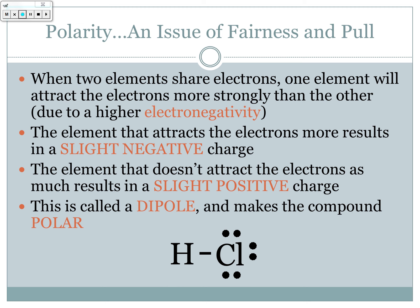For example, hydrogen and chlorine — the single bond we found earlier. Hydrogen has an electronegativity of 2.1, chlorine has one of 2.5, so chlorine is going to attract those electrons more than hydrogen, which means it's going to have a slight negative charge. That symbol that looks like an incomplete 8 is called a lowercase delta, and it means 'slight' or 'slightly.' So chlorine is slightly negative (δ−) and hydrogen is slightly positive (δ+). This is a polar molecule with a dipole.